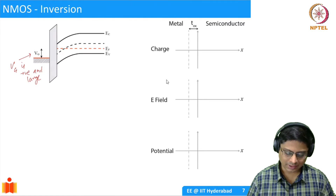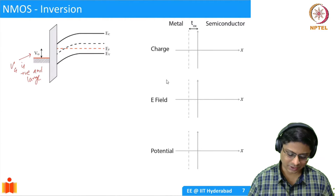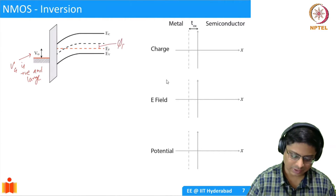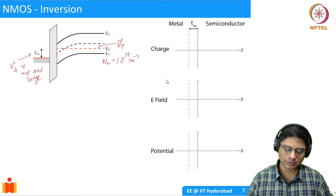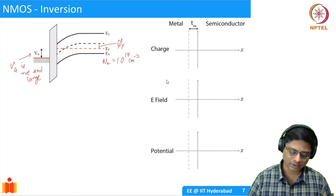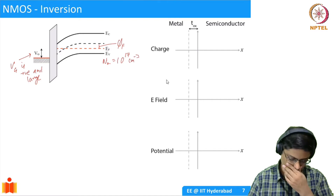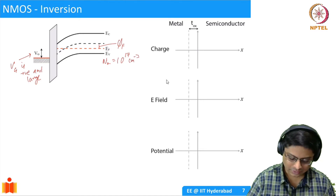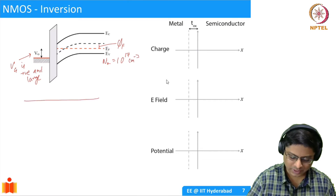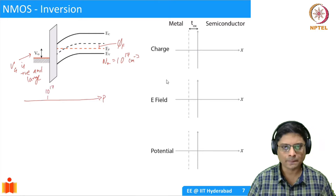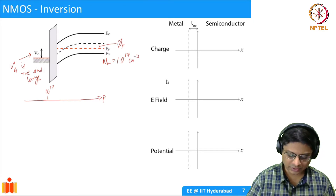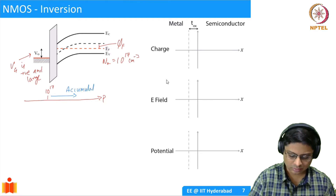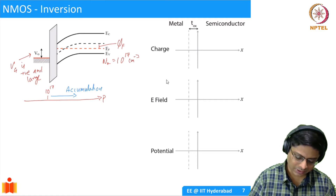To understand this, let's first look at the bulk region. We have phi_f here. Let's say NA equals 10^17 per centimeter cubed as an example. Now if you change the hole concentration at the surface: if I have 10^17 at equilibrium and I increase the hole concentration, I call this accumulation. When I go lower than this equilibrium value, I call it depletion.